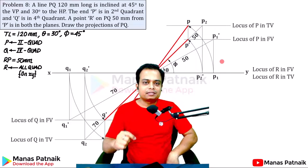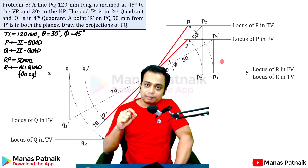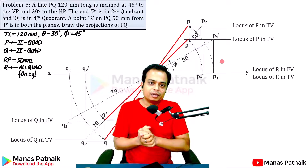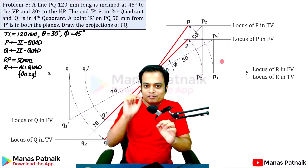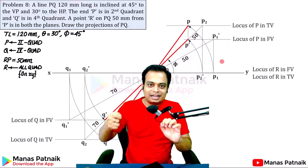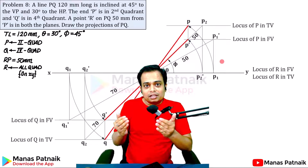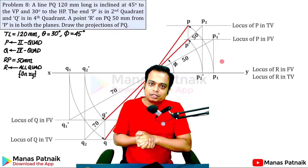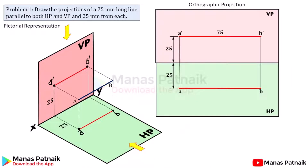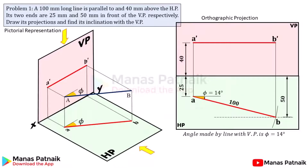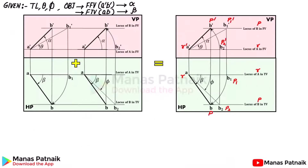The example I'll be discussing in today's session is from the chapter projection of lines. I've already uploaded more than 30 videos on this topic and students have really appreciated my work, but there are a few more areas which need some tightening. Students are usually comfortable with projection of lines in the first quadrant — a line could be parallel, inclined to HP, inclined to VP, or inclined to both HP and VP simultaneously.